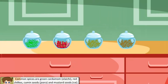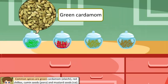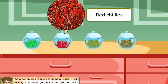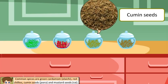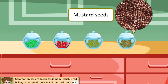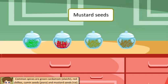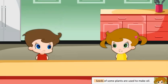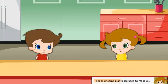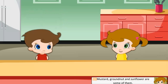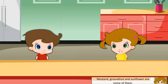Common spices are green cardamom (elaichi), red chillies, cumin seeds (jeera) and mustard seeds (rye). Seeds of some plants are also used to make oil. Mustard, groundnut and sunflower are some of them.